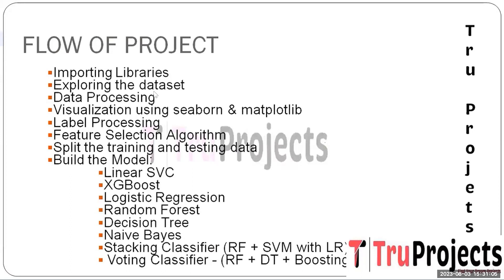The second step is exploring the dataset — a comprehensive analysis of the dataset is undertaken, aiming to comprehend its structure, distribution, and potential challenges. The third step is data processing, where data processing techniques are applied to clean, normalize, and transform the dataset, ensuring it is in the optimal state for subsequent analysis and modeling.